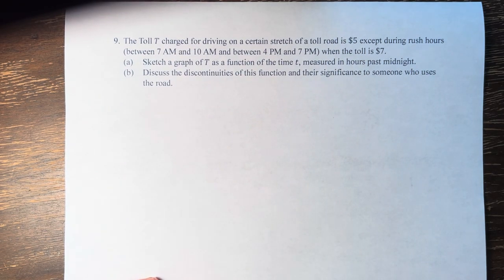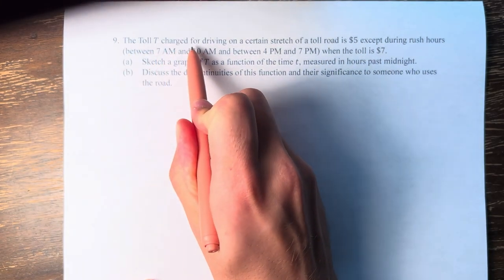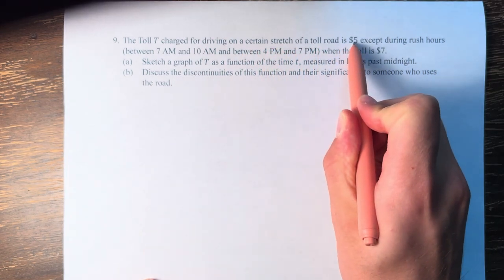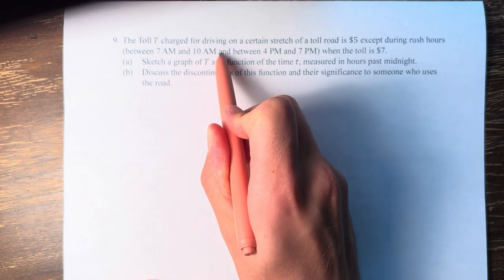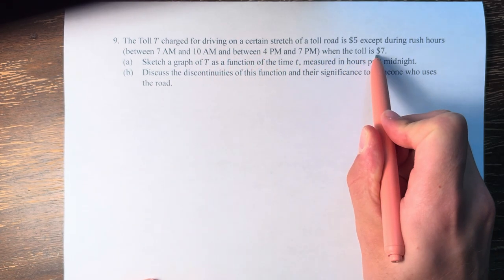Hello and welcome back to another video. In this problem, we're told that the toll t charged for driving on a certain stretch of a toll road is $5, except during rush hours between 7 a.m. and 10 a.m. and between 4 p.m. and 7 p.m. when the toll is $7.